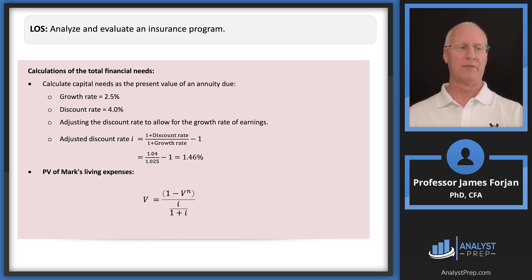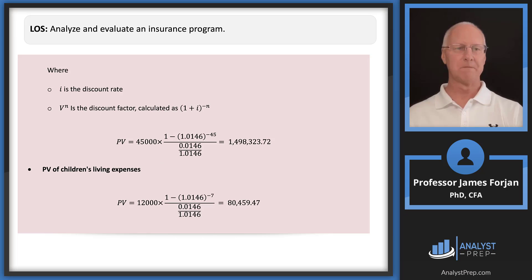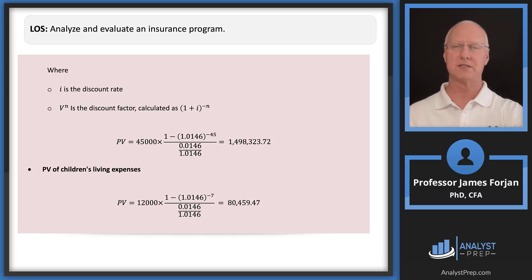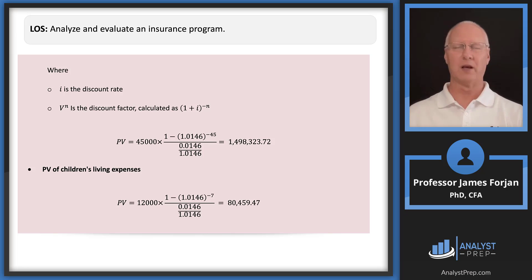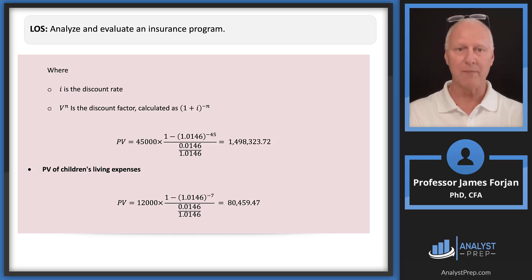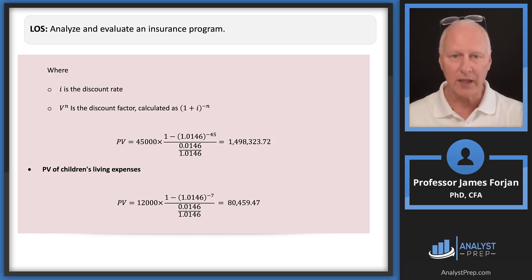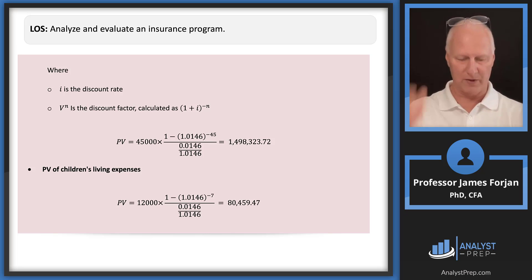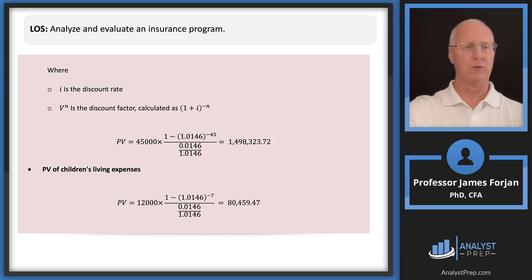There's a formula for the present value of Mark's living expenses — essentially a standard present value of an annuity due formula. Using the financial calculator in begin mode: payment = $45,000, interest rate = 1.46% (the adjusted discount rate), N = 45 years, future value = 0, solve for present value → $1.498 million. Do the same for the daughters' living expenses and Mark's income. Summing those gives $595,000 in present value terms.